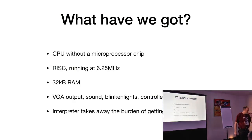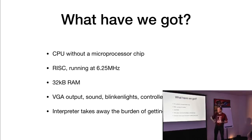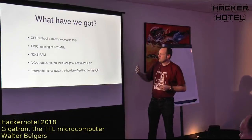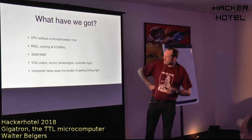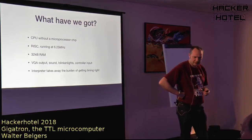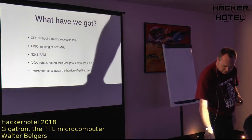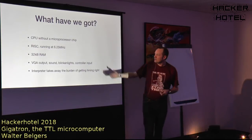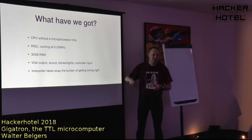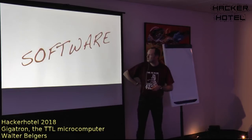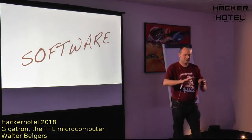So what have we got? A CPU built from common TTL logic — no microprocessor — with a RISC architecture running at 6.25 MHz. We have 32K of RAM, upgradable to 64K with extra wiring, VGA output, sound output, blinking lights, and a game controller. We also built an interpreter. Now let me get to the software that solves the hardware design constraints we've been discussing.